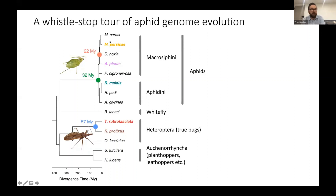Here is a phylogeny of Hemiptera with sequenced genomes. The aphids are at the top with seven or eight aphid species with sequenced genomes. Myzus persicae at the top and Acyrthosiphon pisum diverged about 22 million years ago. The corn leaf aphid, which belongs to the second tribe, Aphidini, diverged about 30 million years ago. Overall, Hemiptera are an ancient group which diverged around 300 to 400 million years ago.